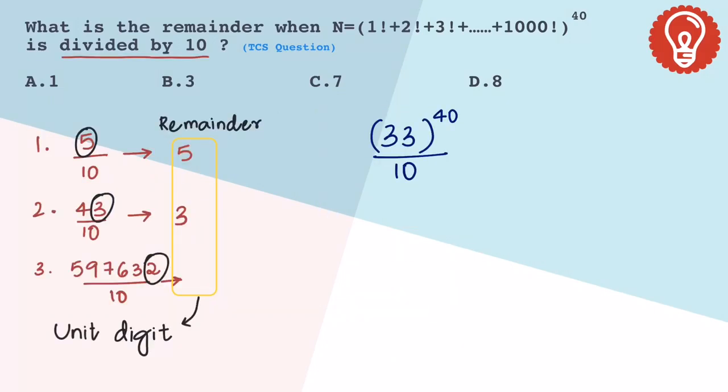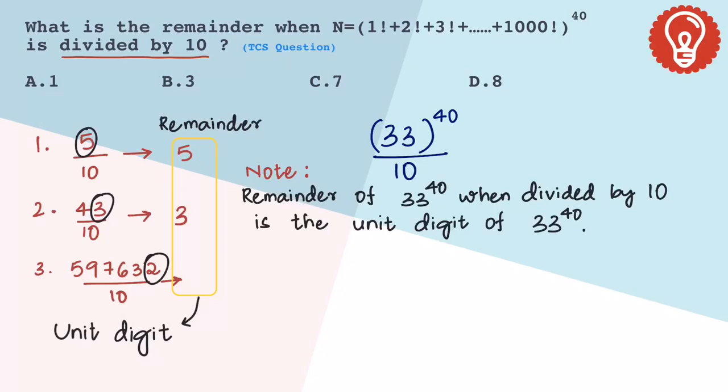Remember this part of the solution. To find the remainder of this means to find the unit digit of 33 power 40.